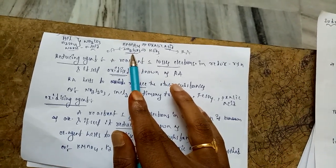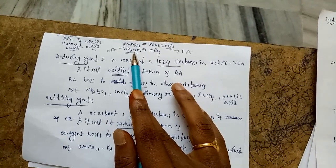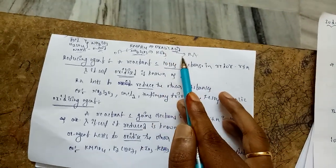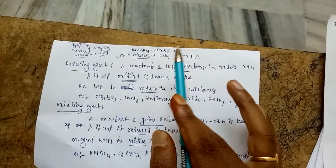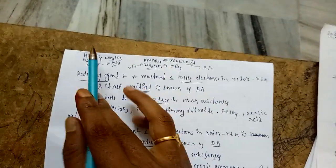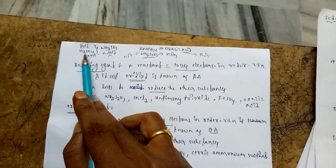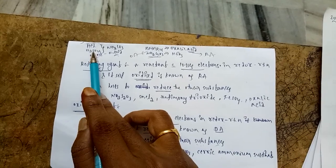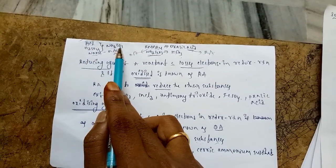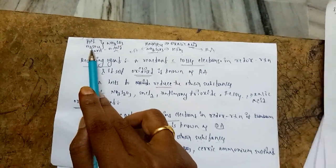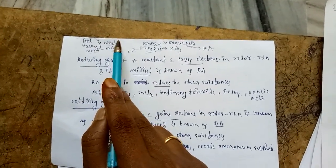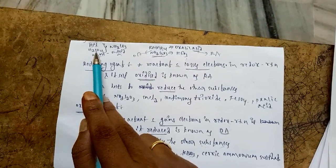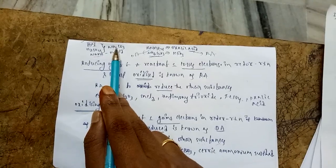Sodium thiosulfate, which is a reducing agent, is standardized by using potassium iodate, which is an example of an oxidizing agent. This is the same concept as in acid-base titration: for HCl and H₂SO₄, which are acids, we use sodium carbonate for standardization. Sodium carbonate is basic in nature; HCl and H₂SO₄ are acidic. Likewise, sodium hydroxide, which is basic, is standardized by oxalic acid, which is acidic. The same concept is applicable in redox titration.